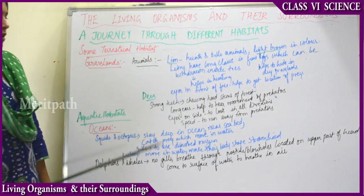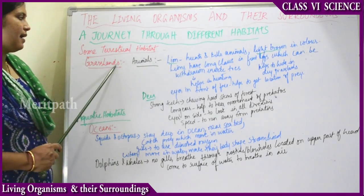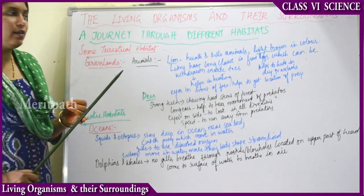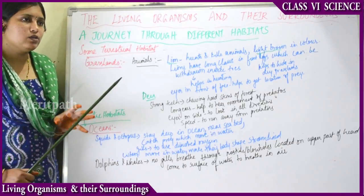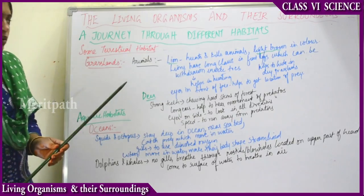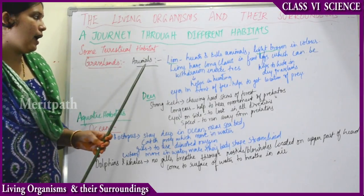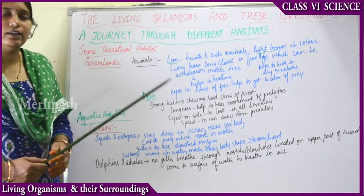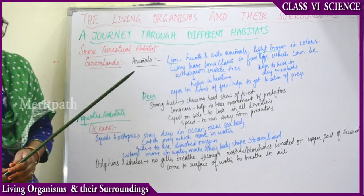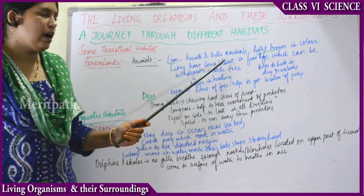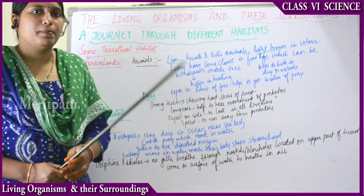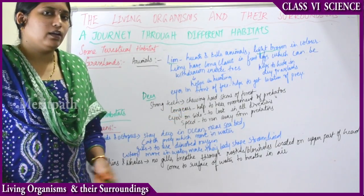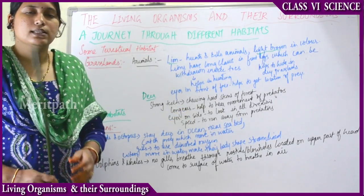The next terrestrial habitat is grasslands. In grasslands, we will be studying more about forests, which usually have lots of grass area. The animals which live in grasslands or forests include the lion. Lion usually hunts and kills animals for food. It is light brown in color — but how does this color help?